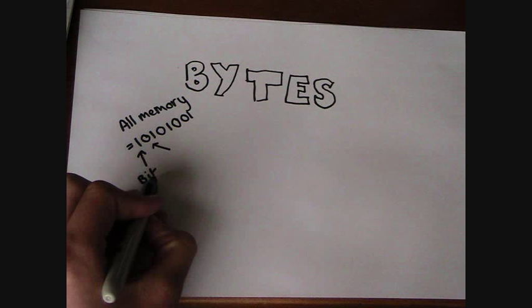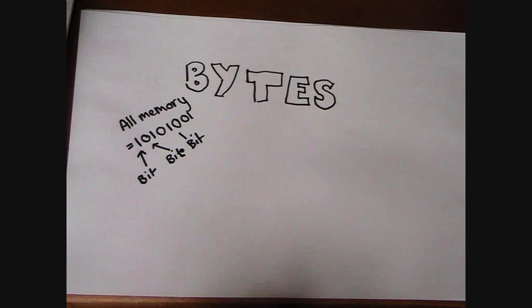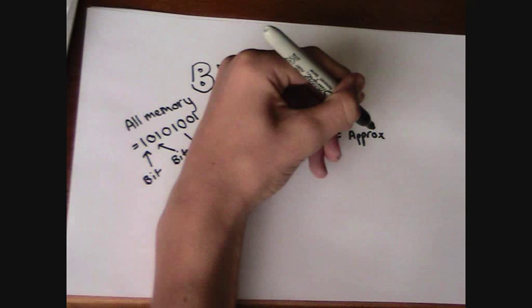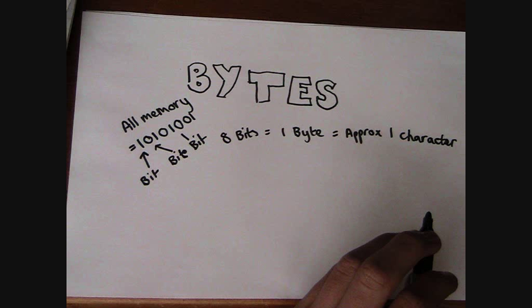All digital data is stored as binary — basically just ones and zeros. Each one or zero is one bit of data. Eight bits of data are called a byte, and a byte can make any character. Half a byte, or four bits, is called a nibble.